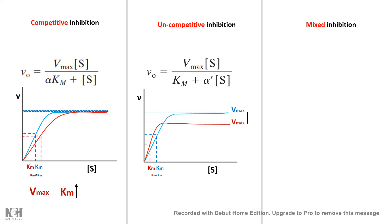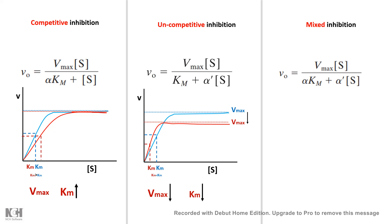From the curve for uncompetitive inhibition, you can tell that both Km and Vmax have decreased. We can appreciate why Vmax has decreased — it decreases by a factor of α' (Vmax/α'). But why does Km decrease? A decrease in Km means an increase in affinity of the enzyme towards the substrate. To understand how that happens, watch the dedicated video on uncompetitive inhibition where the derivation and explanation are provided — the link is given at the end of this video.